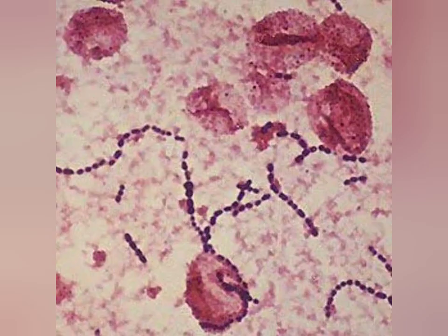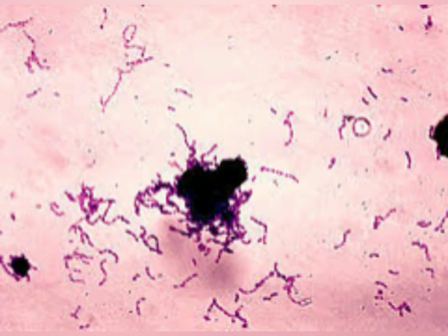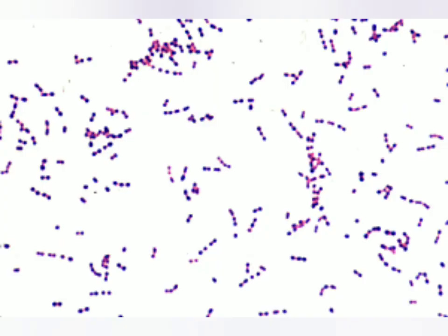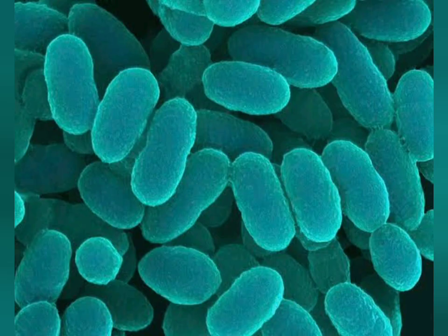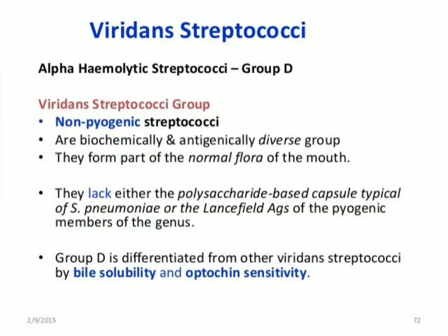Examples are Streptococcus mitis, Streptococcus mutans, Streptococcus salivarius, and Streptococcus sanguis, which is most responsible for bacterial endocarditis. The alpha streptococci are normal commensals in the throat and they may cause opportunistic infections rarely.